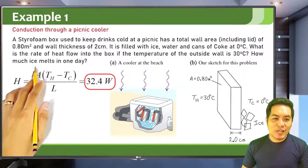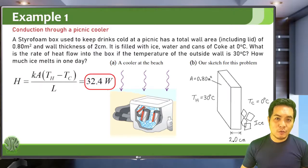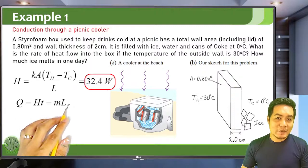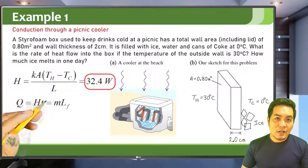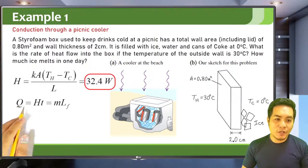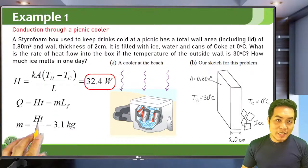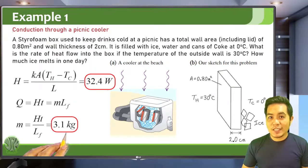For the second part — how much ice melts in one day — we use the latent heat of fusion. The heat involved in melting ice is Q = m·Lf. Since heat current H = Q/t, we have Q = H·t. Solving for mass: m = H·t / Lf. Substituting the values gives a result of 3.1 kilograms of ice melted in one day.